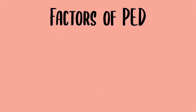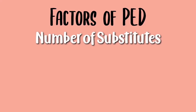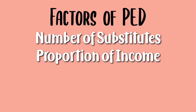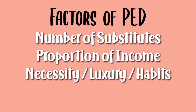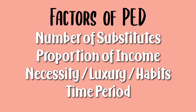Last but not least, we'll be looking into factors of PED. There are many factors affecting PED but today I'll only be discussing 4 main factors. First is the number of substitutes — if a product has many substitutes, there is more likely to be elastic demand. Next is the proportion of income; for example, a product which takes up a large proportion of income would likely have elastic demand. Next is necessity, luxury, and habit. Necessity and habit would most likely be inelastic, whereas luxury is elastic. Finally, we have time period — if a product could be paid through installments, then it is more likely to have elastic demand.